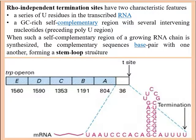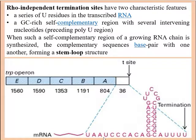The first type is rho-independent termination. A prokaryotic gene or an RNA transcribed from it which uses rho-independent termination will have two characteristic features. The first is that the transcribed RNA will have a series of uridine (U) residues at the 3' end. There will be a series of uridine residues at the 3' end of the transcribed mRNA.